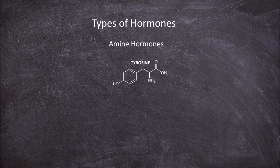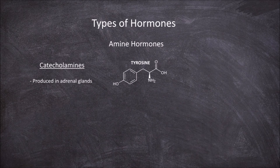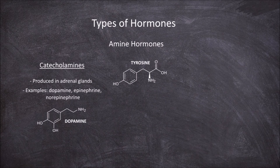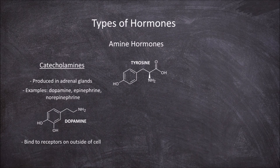The first grouping of tyrosine derived hormones are the catecholamines, which are produced in the adrenal glands and the adrenal medulla. An example of a catecholamine hormone is dopamine, which acts as a neurotransmitter playing an important role in signalling a range of human functions, including motor control. Other examples include epinephrine and norepinephrine, which are involved in the fight or flight responses in humans. Catecholamine hormones, like peptide hormones, bind to receptors on the outside of the cell that produce a signalling cascade through secondary messengers inside the cell.